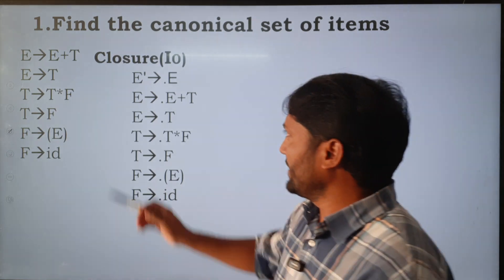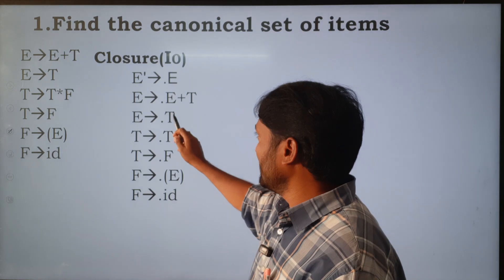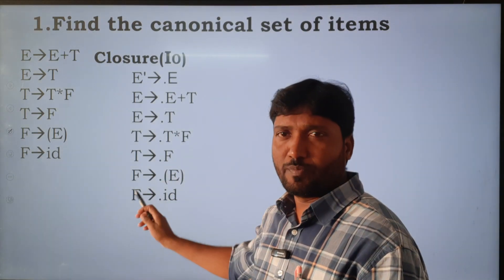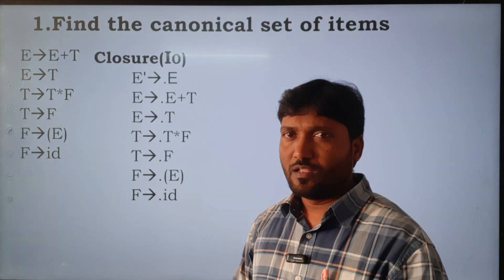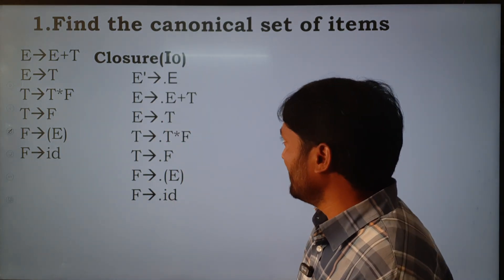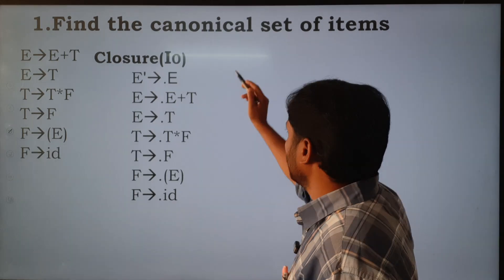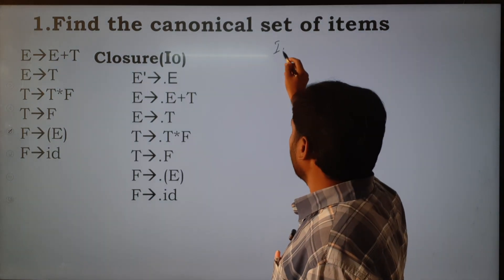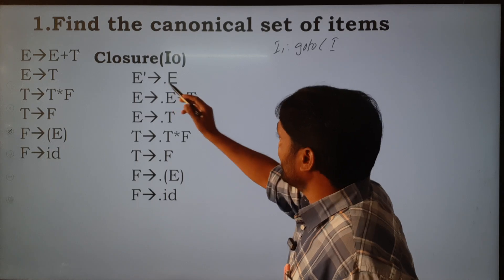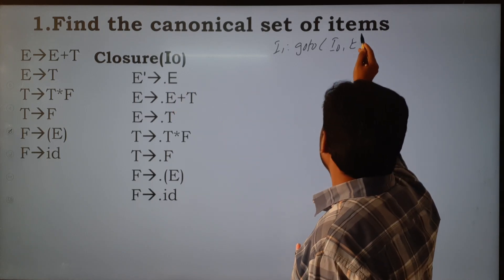That means we apply the goto function for I0 with capital E, then T, then F, then open bracket, then id. If we apply the goto function for capital E, that is goto(I0, E).